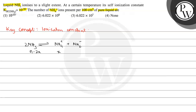The number of moles of NH2− will also be x. The ionization constant is equal to the concentration of NH4+ multiplied by the concentration of NH2−. The value of K is 10 raised to the power minus 30. So this is x multiplied by x equals 10 raised to the power minus 30.